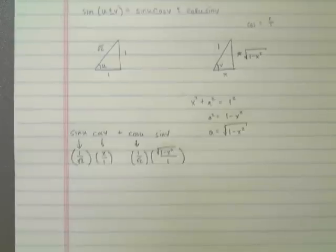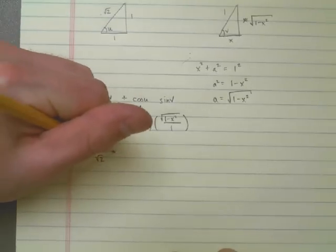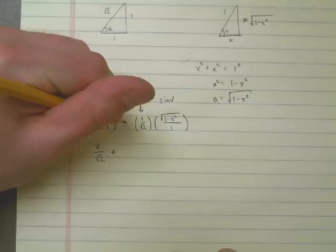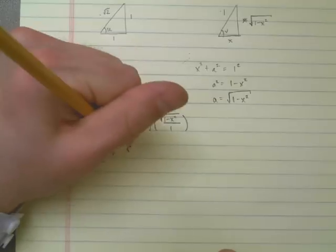So last step then, I need to do a little simplification here. This left one ends up being x over the square root of 2. And I'm going to add,